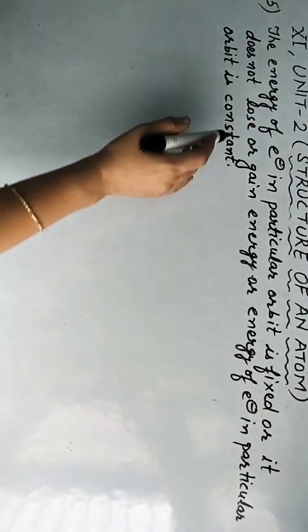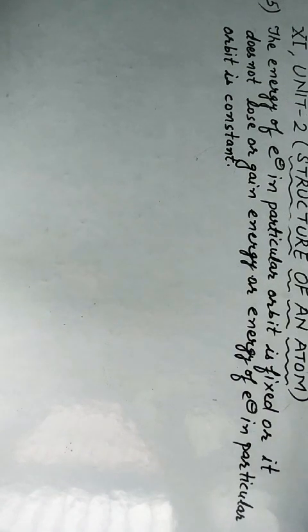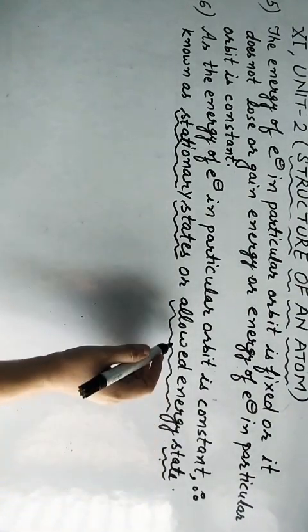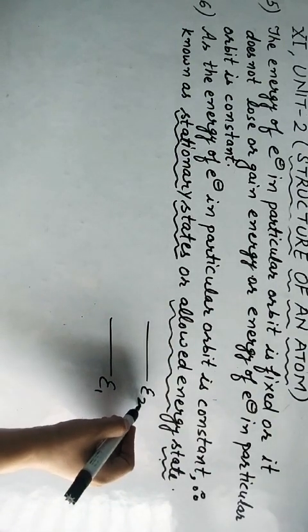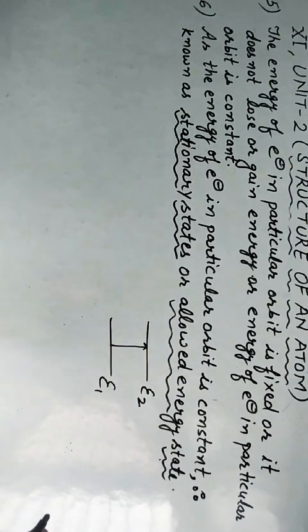In simple words, the energy of an electron in a particular orbit is a constant — fixed. That is why these are called stationary states. Stationary state does not mean the electron is stationary; it means the energy of the electron at that particular level or shell is fixed, stationary. These are also called allowed energy states. The electron is allowed to move from one shell to another, but only when it loses or gains a particular fixed amount of energy equal to the energy gap (delta E) between those levels.